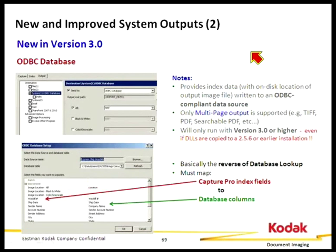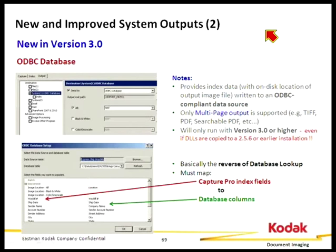Another thing that's new — actually not a change, but a new output format on the DVD — is something we call ODBC Database. It's kind of the opposite of Database Lookup. In Database Lookup, I'm populating index fields from an ODBC database. With this output format, I'm writing my index fields to an ODBC database.